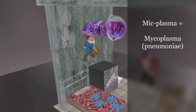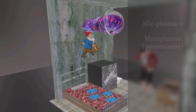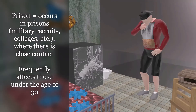This scene takes place in a jail cell because infection by Mycoplasma pneumonia often occurs in prisoners, as well as in college students and military recruits, where individuals live in close contact. It frequently affects young individuals, which is why the prisoner in this scene is on the younger side — reminding us that infection frequently occurs in those under the age of 30.